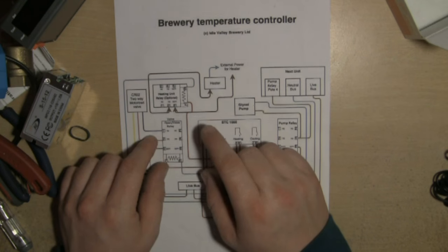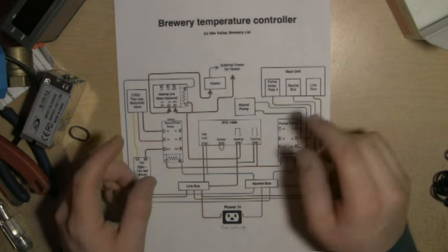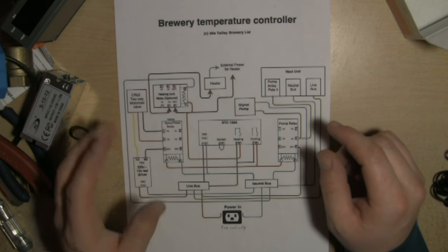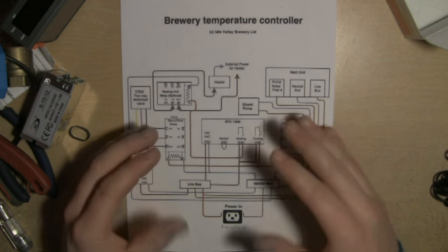If you've got smaller tanks or you're in a colder climate, then it may be advisable for you to put some type of heating unit around your fermenter.